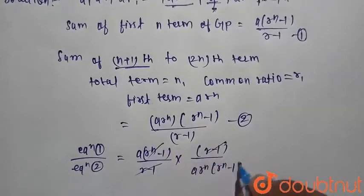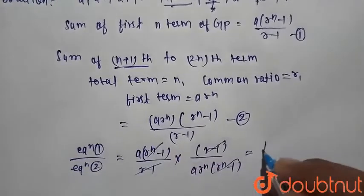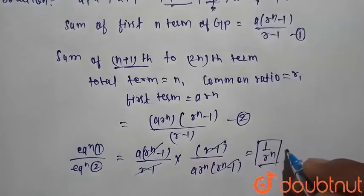So these cancel out. We can write this is equal to 1 upon r raise to power n.